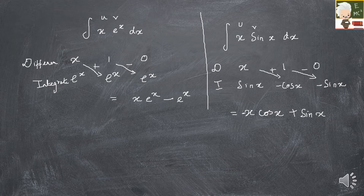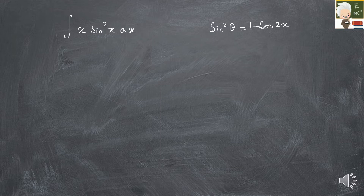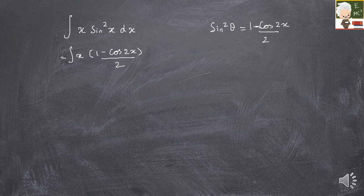Now a more complicated example: integral of x·sin²(x) dx. For sin²(x), use the trigonometric identity: sin²θ = (1 − cos 2x)/2. Substituting, the integral becomes: integral of x · (1 − cos 2x)/2 · dx.